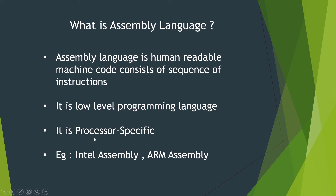Assembly language is also processor-specific, meaning the instructions change from processor to processor. Examples are Intel assembly and ARM assembly. If you look at the syntax of Intel and ARM assembly, they are pretty much different, but the overall process is the same — the types of instructions written are the same, just with a difference in text.